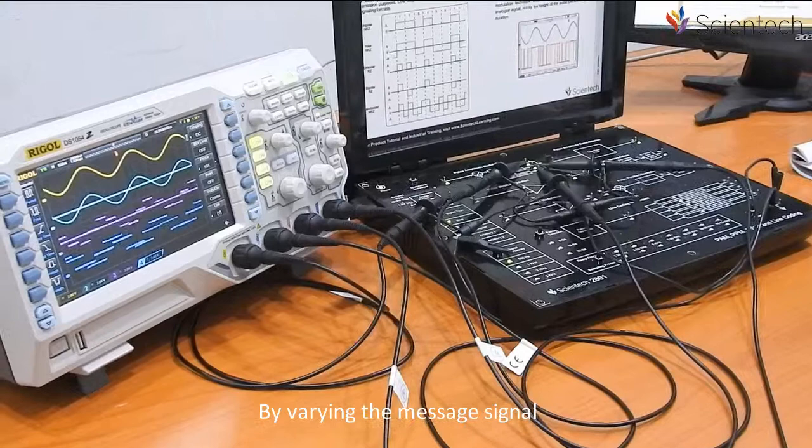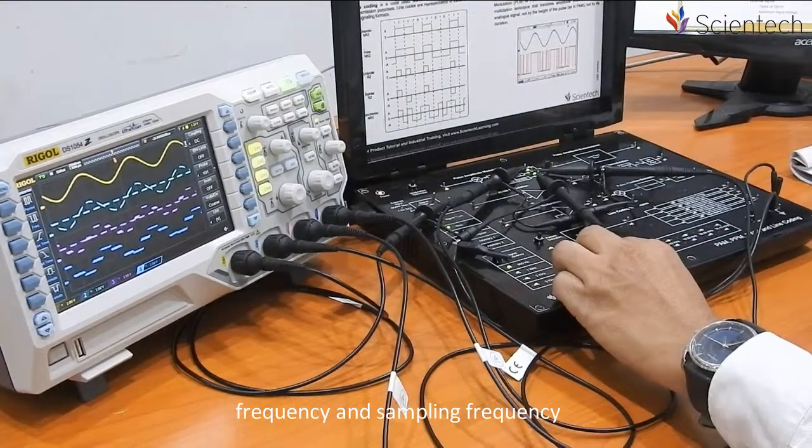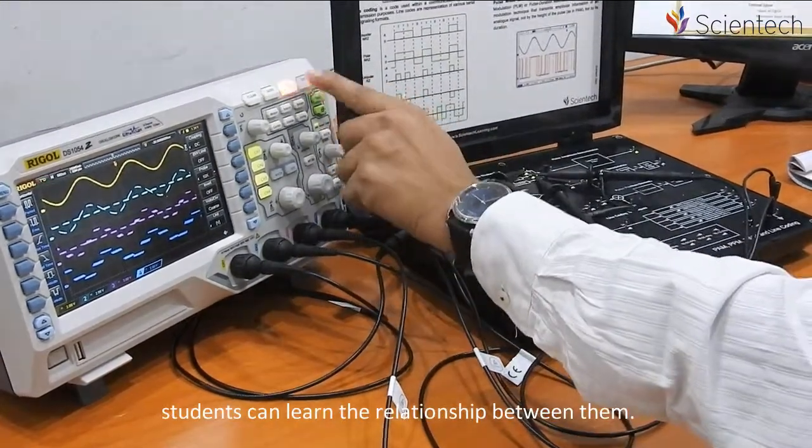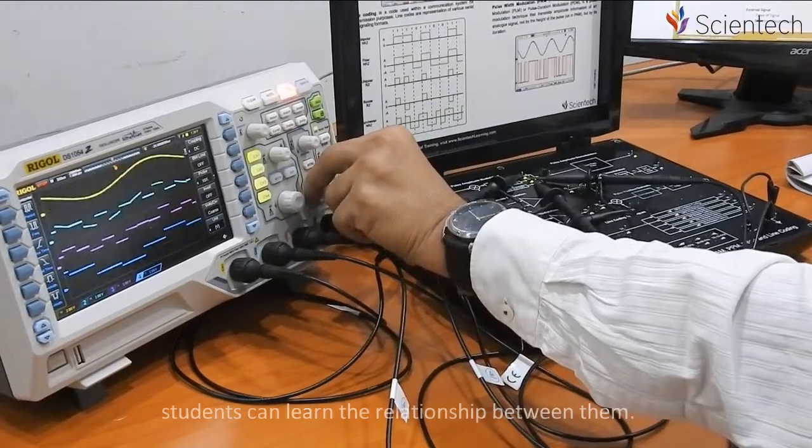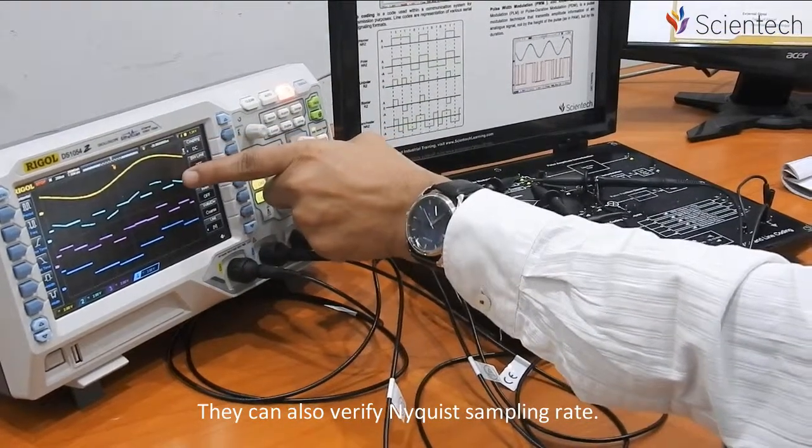By varying the message signal frequency and sampling frequency, students can learn the relationship between them. They can also verify Nyquist sampling rate.